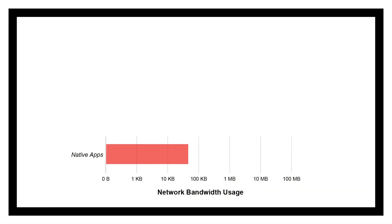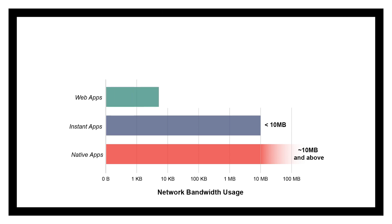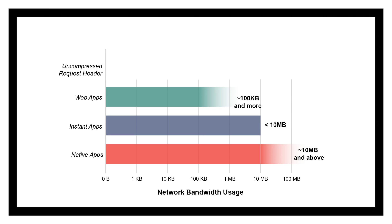Native apps usually weigh well over 10 megabytes, sometimes going well into hundreds of megabytes. Instant app frameworks such as Apple's App Clips and Google's Play Instant are typically capped at size limits of 5 to 10 megabytes. Web apps have lesser network bandwidth requirements, typically using 100 kilobytes to a few megabytes to load. A large fraction of these network bandwidths are used to load libraries and frameworks of the app. However, the user interface metadata in itself can be made very lightweight, and an uncompressed request header, which can be used to trigger app functionality, usually requires less than a kilobyte to send.